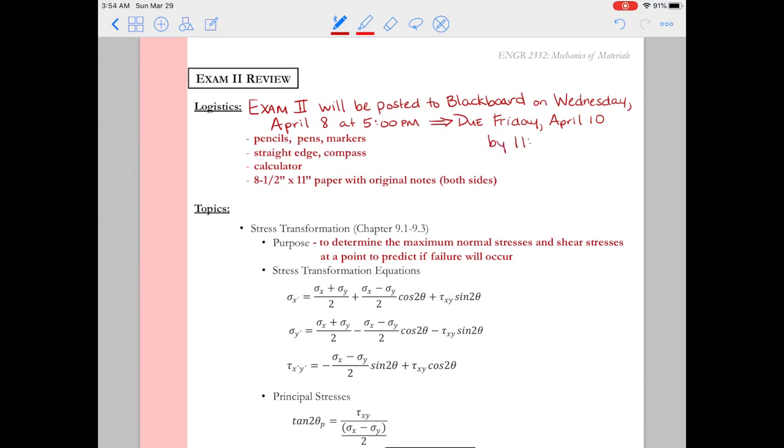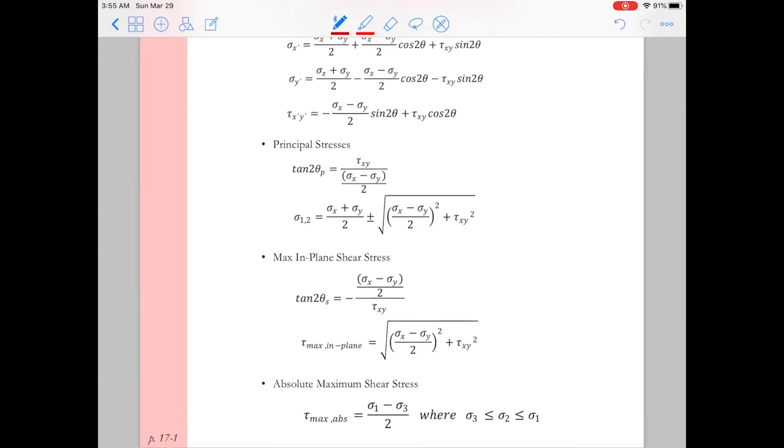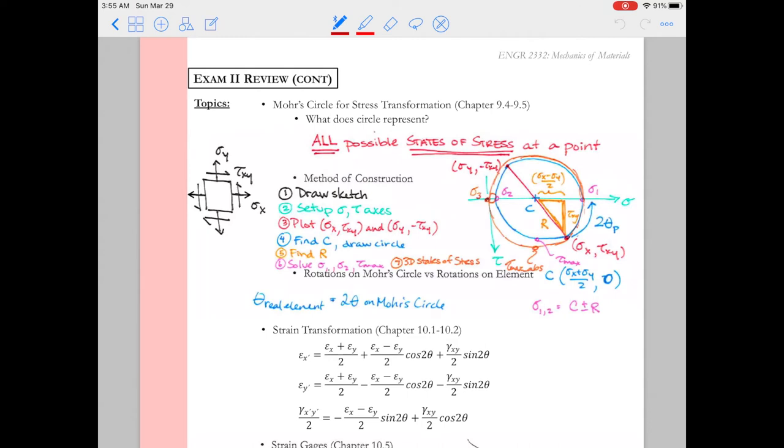The topics on the exam cover everything since exam two, so we looked at stress transformation in the different equations. The main purpose for doing stress transformation was to determine the maximum normal and shear stresses that occur at a point so that we can predict if failure will occur. We came up from equilibrium with these stress transformation equations, and I have them listed here for sigma x prime, sigma y prime, and tau x prime y prime. From there we took derivatives to find the angle to the principal plane and also the principal stresses sigma one and two, and then we also found the angle to the in-plane shear stress and tau max in plane. Finally we talked about the absolute maximum shear stress.